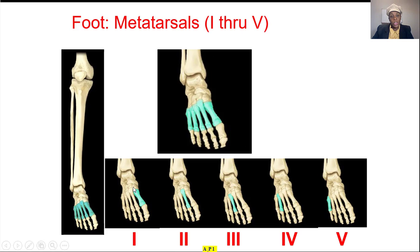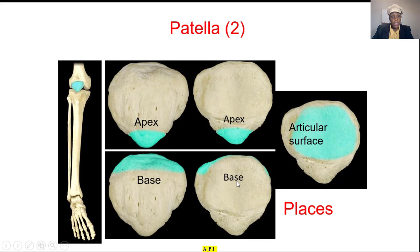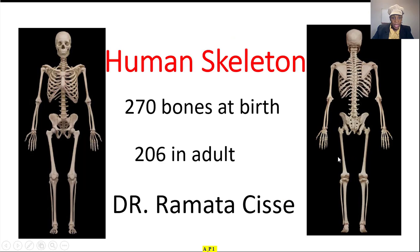The metatarsals: same thing, one through five, and number one is the big toe, the hallux. Then the phalanges: proximal phalanges, middle phalanges, and distal. The big toe does not have the middle phalanx. Then the patella, which is the last bone we're going to cover.